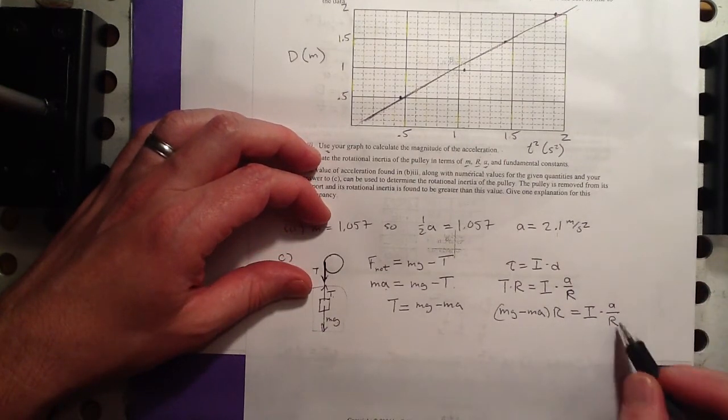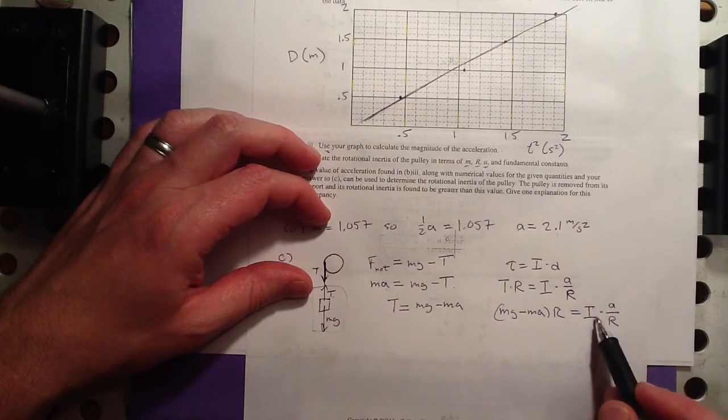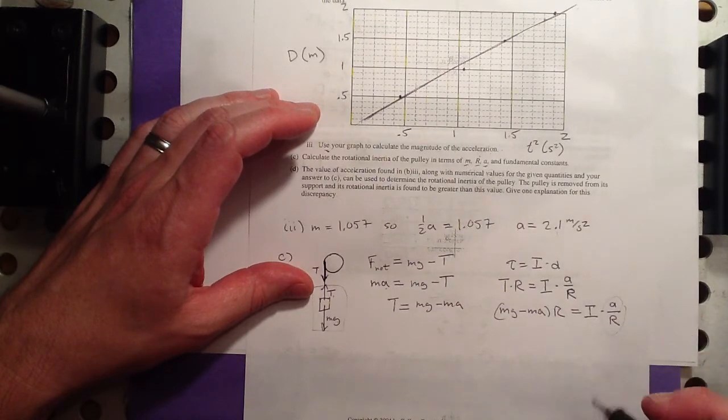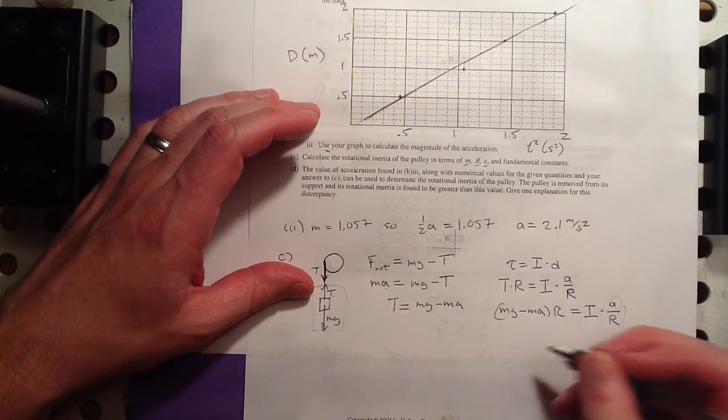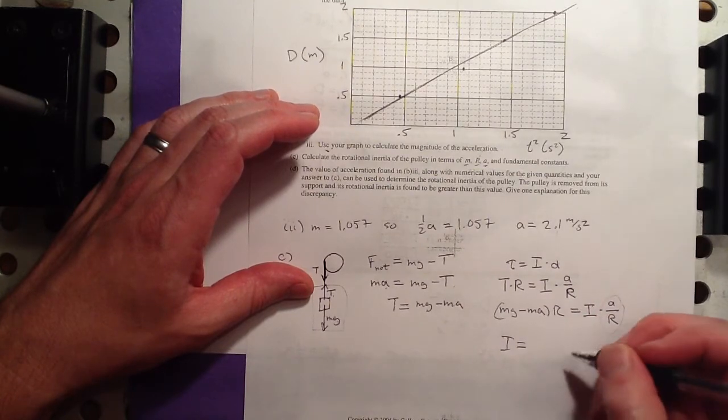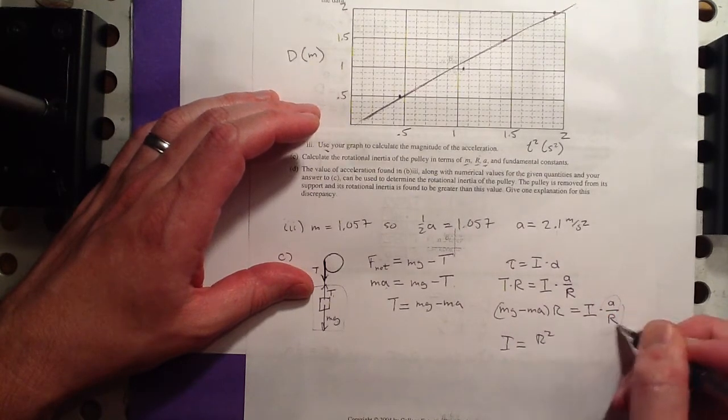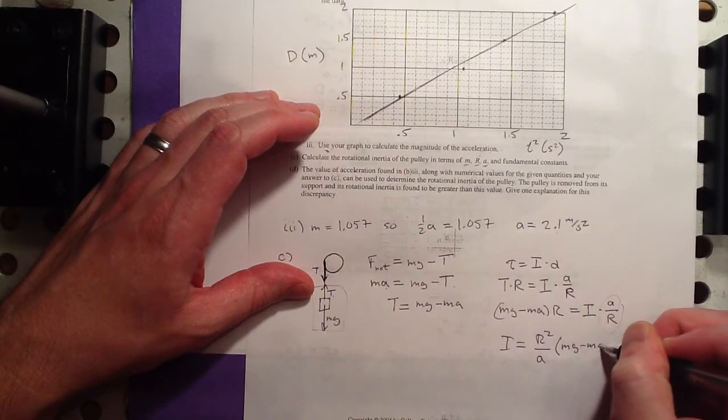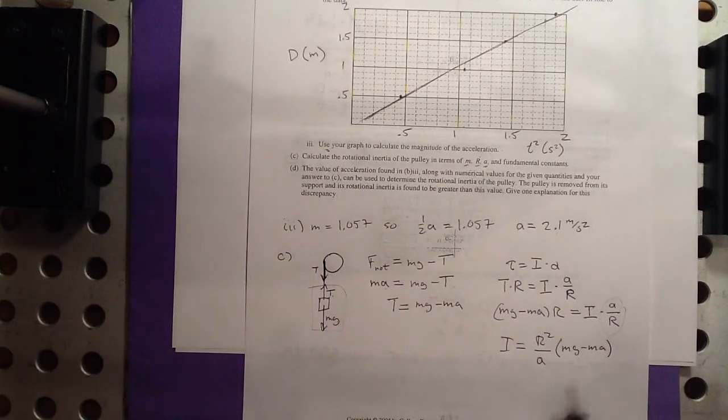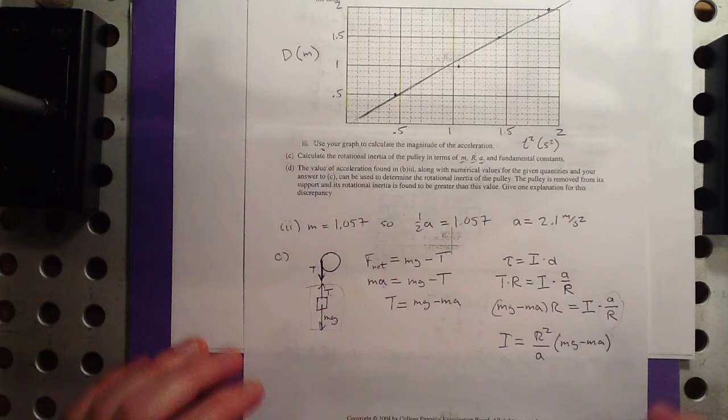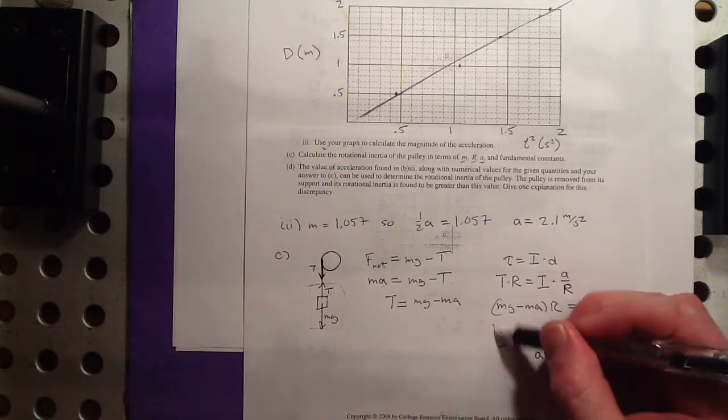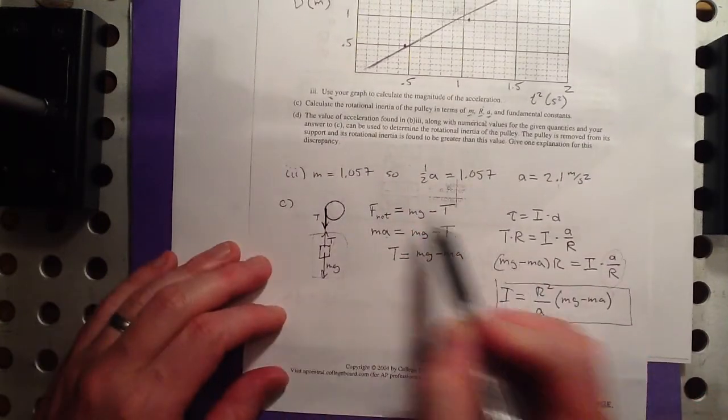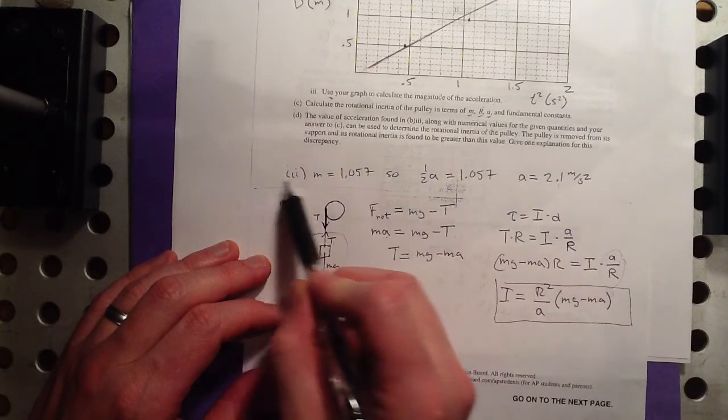Mg minus Ma times R is equal to the moment of inertia times A over R, and I'm trying to solve for rotational inertia, so multiply both sides by this, and that gives me, let's see, I is equal to R squared over A times Mg minus Ma. There are different ways you could simplify that I suppose, but that's totally okay like that. That is the hardest part of this problem.